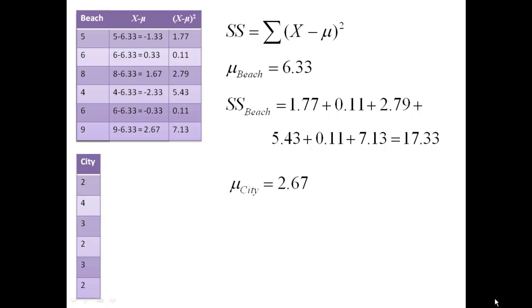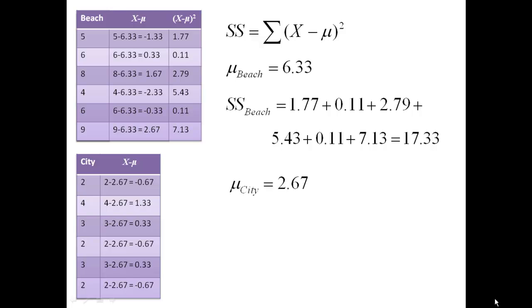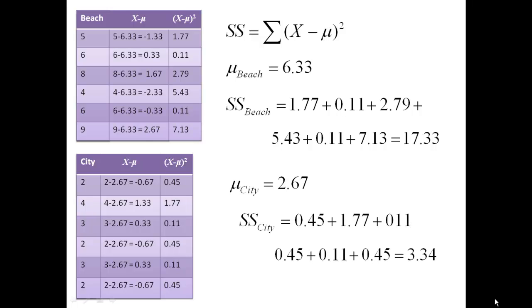Now we're going to do the same thing for the city data. The mean is 2.67. You subtract out the mean from each score of x. Then you square all of those values. This is what the formula for the sum of squares for the city looks like. Now we know the sum of squares for the beach and the sum of squares for the city.